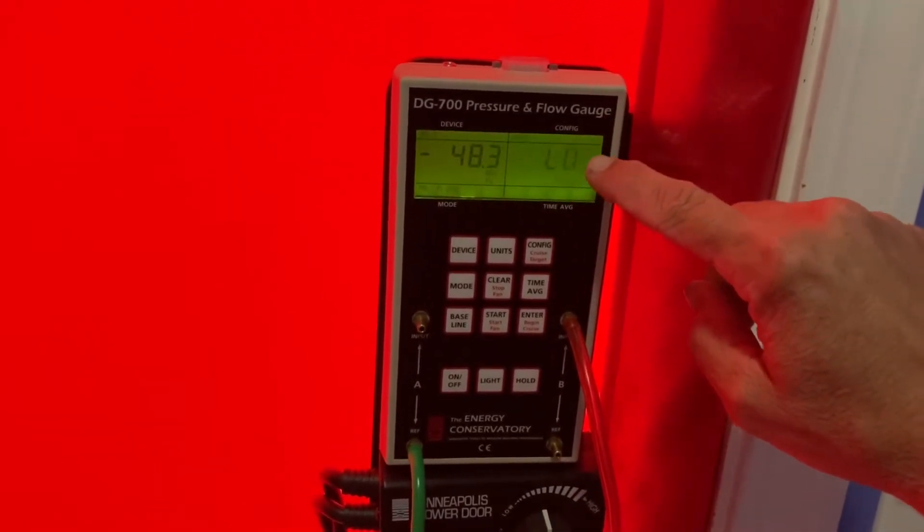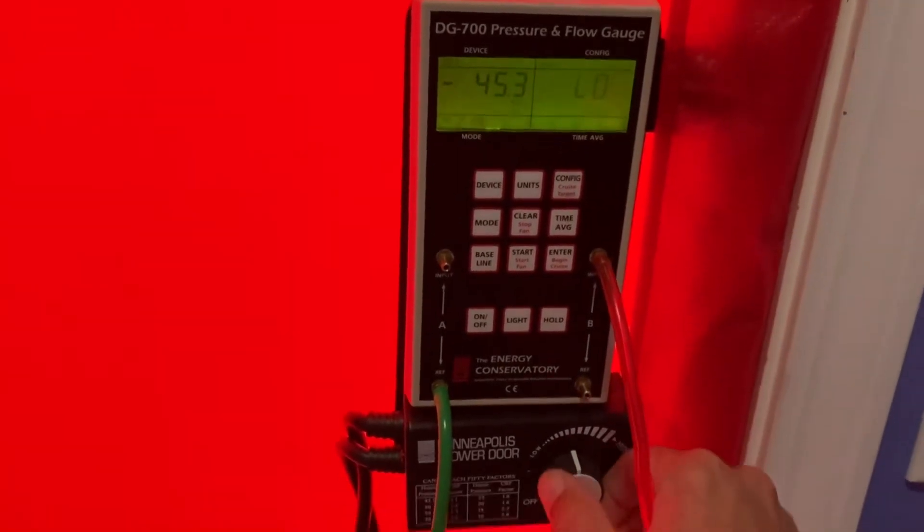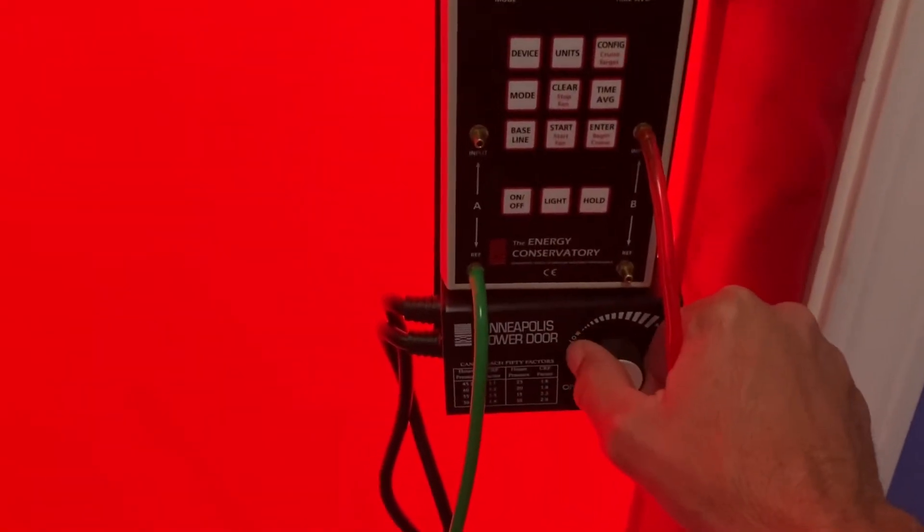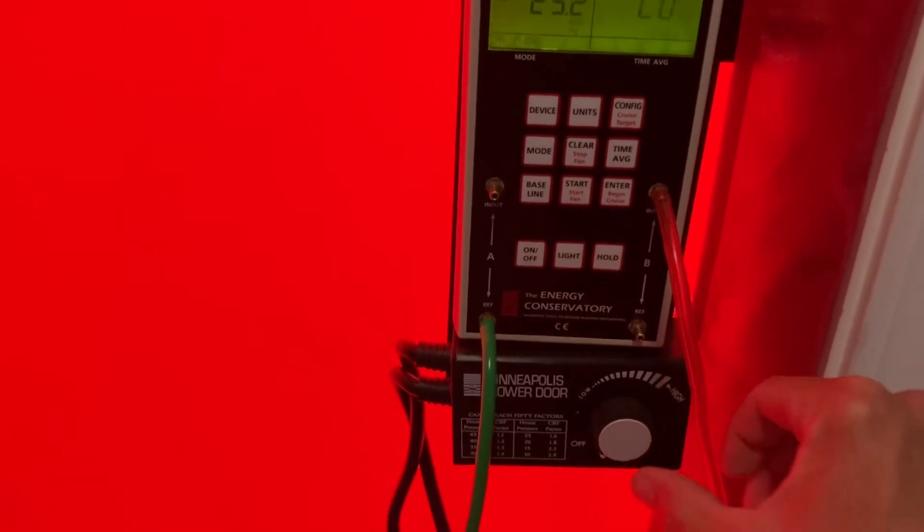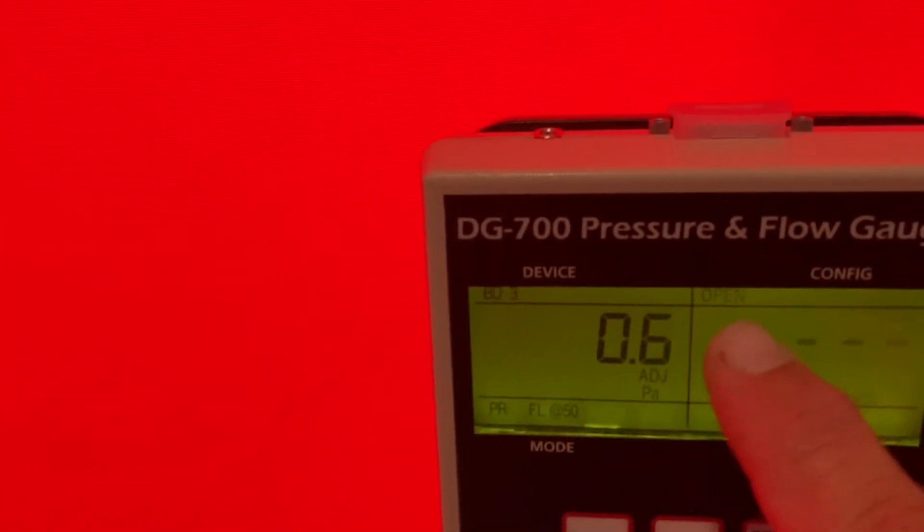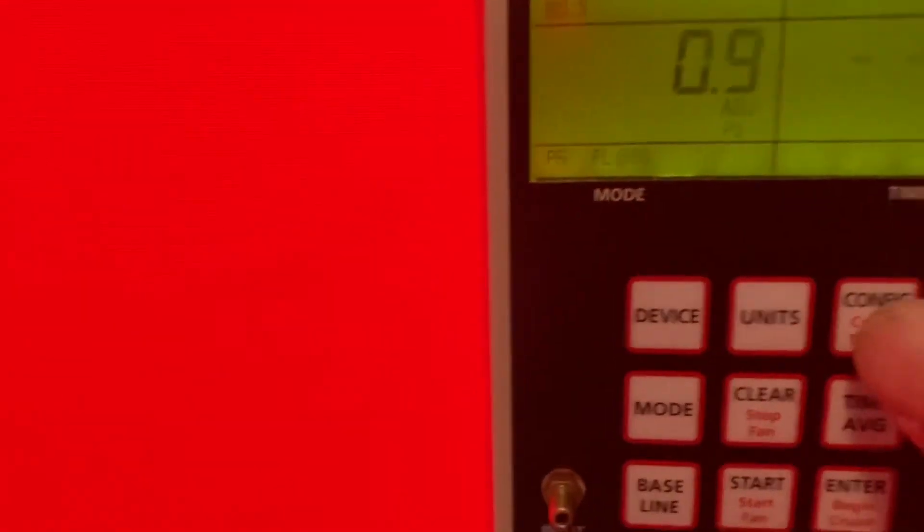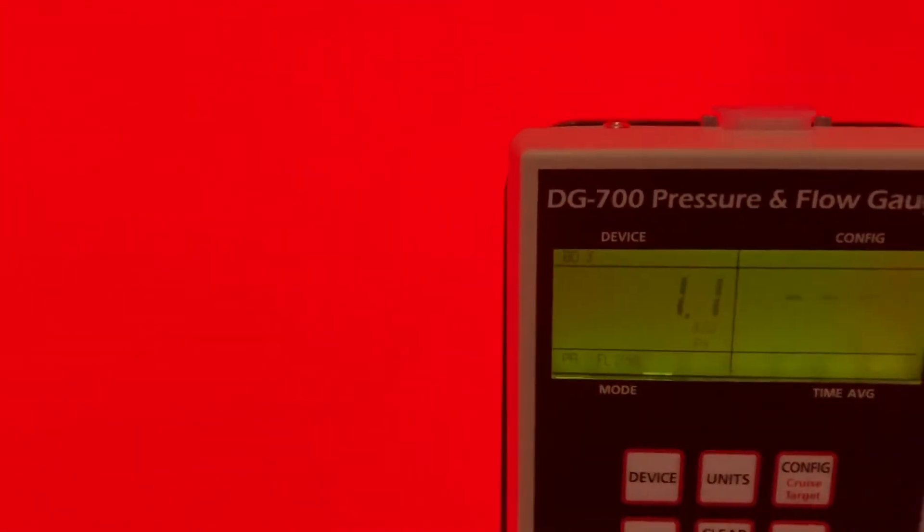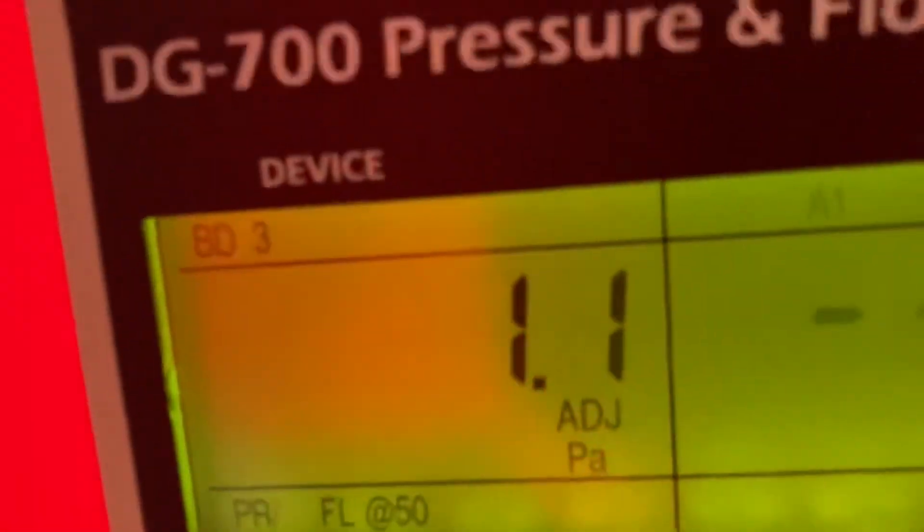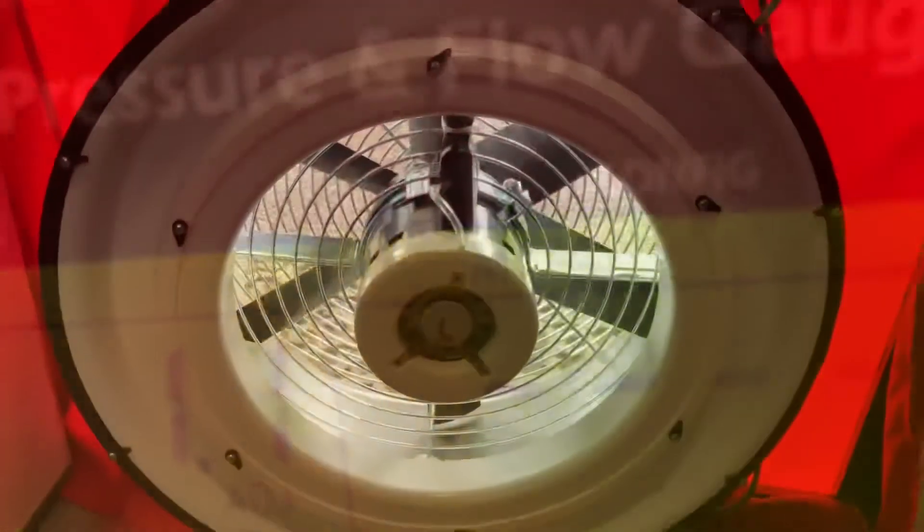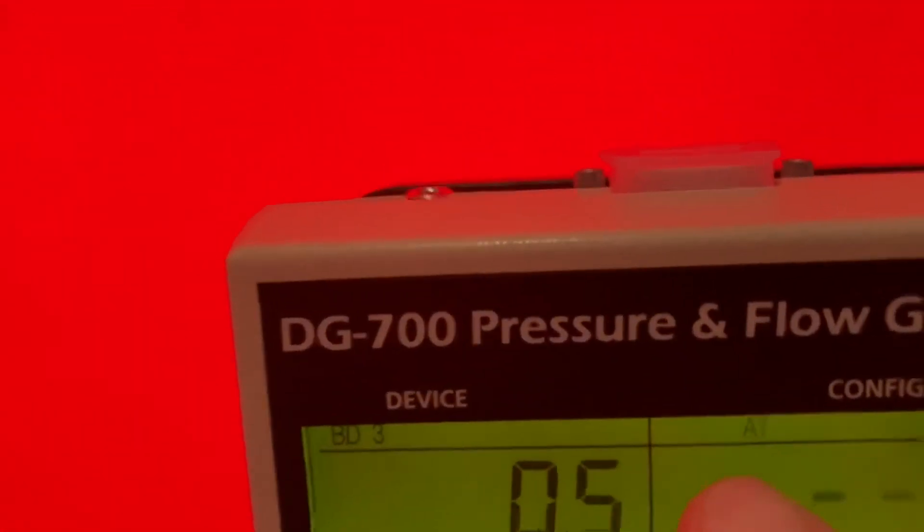So what we'll do is we'll add a ring to the fan and we'll reconfigure the manometer. We're going to add the A ring to it, so we need to reconfigure the manometer. We'll do that by pushing the configure button once until instead of saying open it says A1. Then we'll add the A1 ring to the fan as well so they are matching with each other.